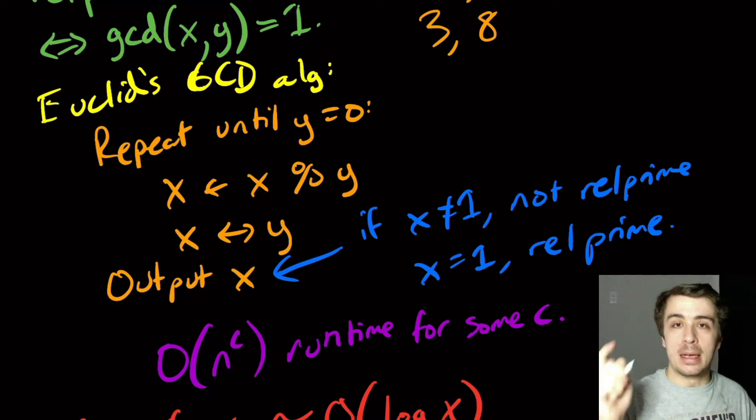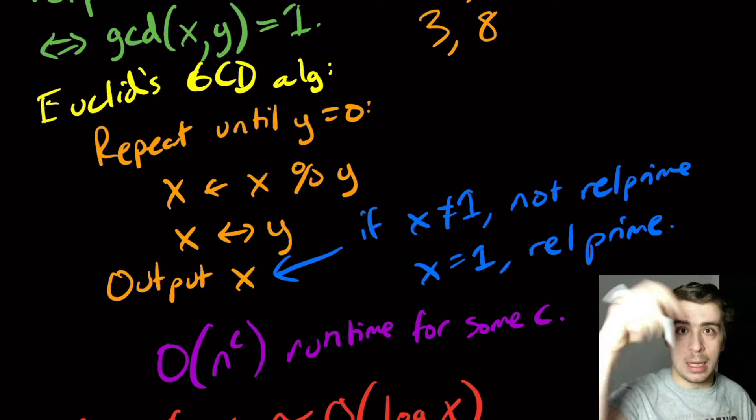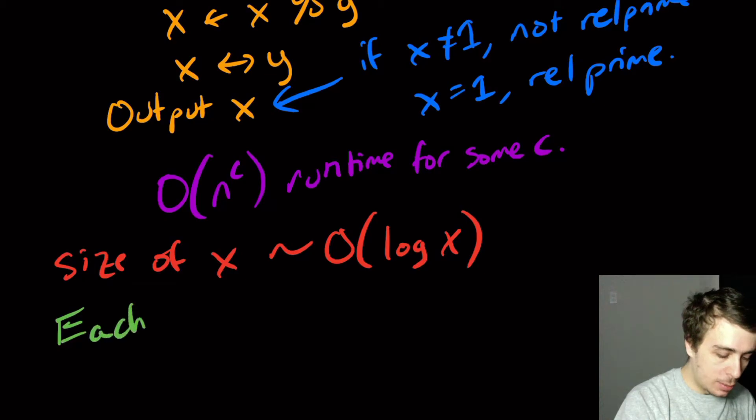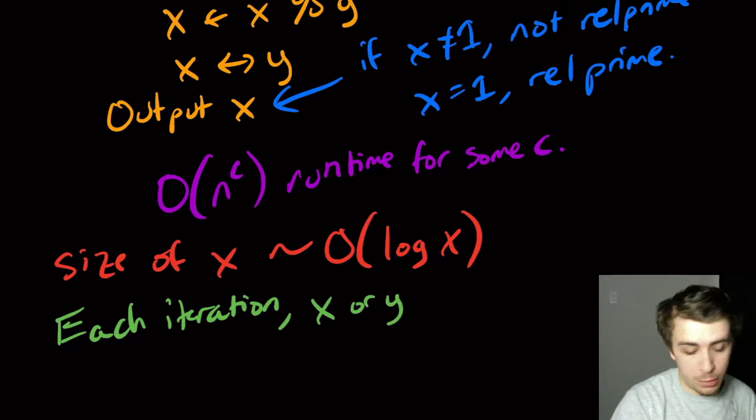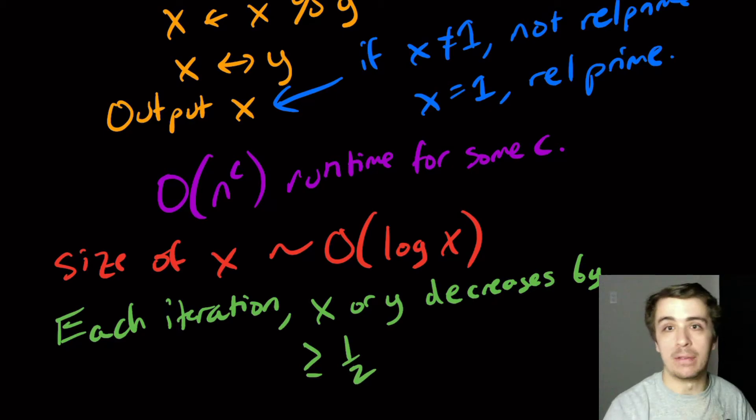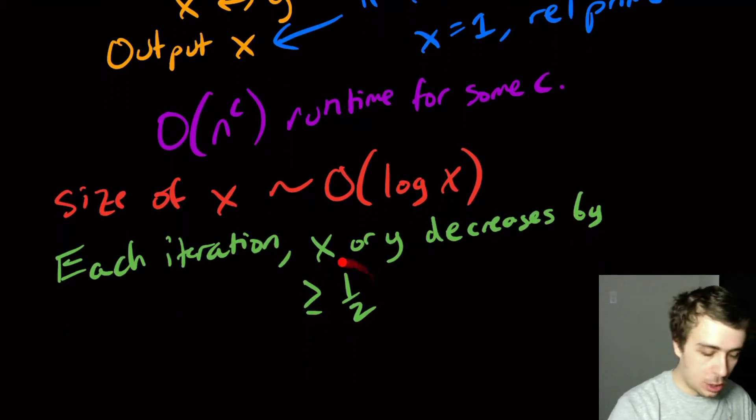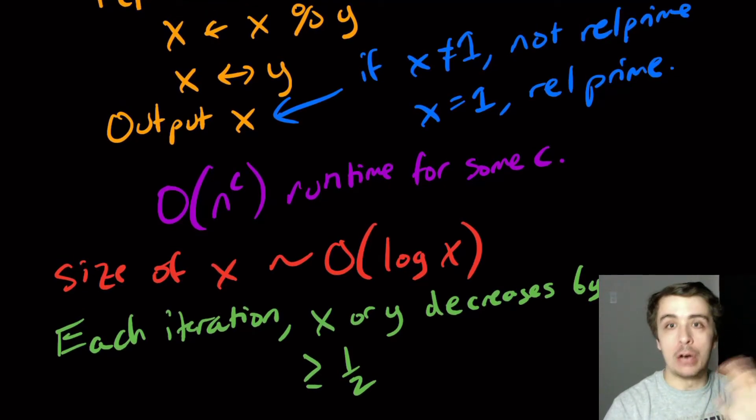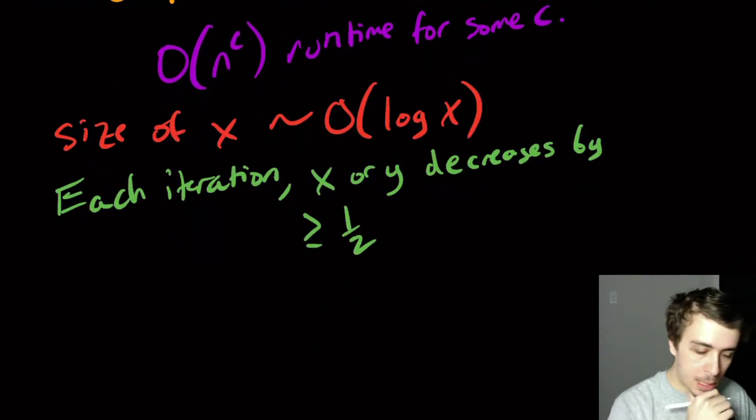So one thing to note here is that each time we do the modulo here, the number x will decrease by at least half every single time. So at each iteration, x or y, whichever the one is the case, decreases by at least half of its value each time. In fact, it could go a lot more if x happened to have something that's really close to a multiple of y here. So it could go way lower, but at worst, it can go down by a half.